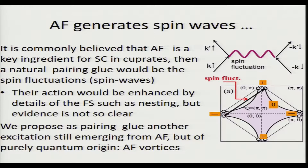It is commonly believed that anti-ferromagnetism is a key ingredient for superconductivity in cuprates, and a natural pairing glue would be the spin fluctuation — the spin waves — whose action would be enhanced by details of the Fermi surface, like nesting. But the evidence for this is not so clear. Here we propose as a pairing glue another excitation, still emerging from anti-ferromagnetism but purely of quantum origin, which we can call anti-ferromagnetic vortices.